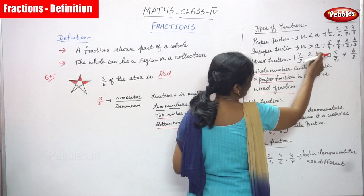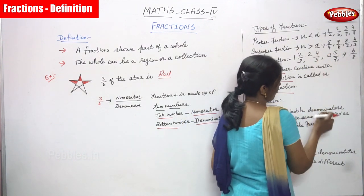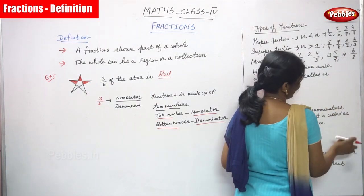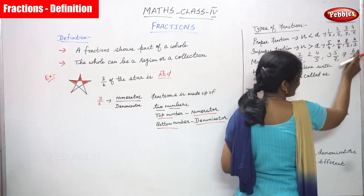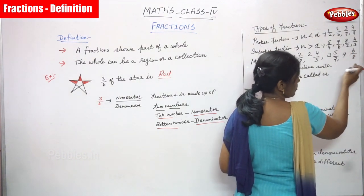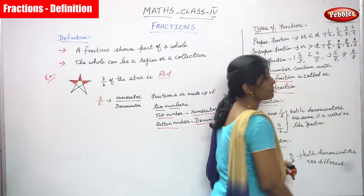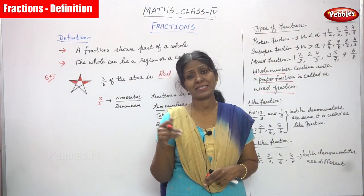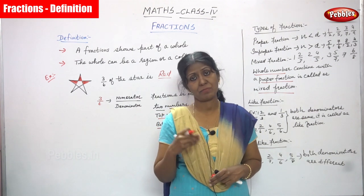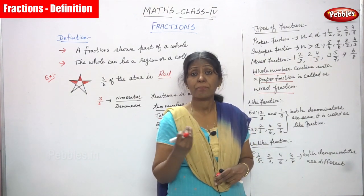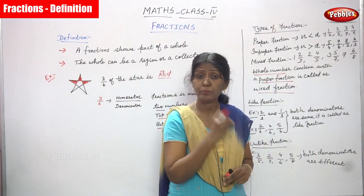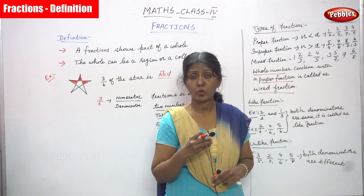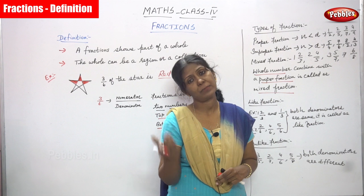More mixed fraction examples: 2 and 4 by 5 — 2 is the whole number and 4 by 5 is a proper fraction because 4 is less than 5. Also 3 and 5 by 7 — 3 is the whole number and 5 by 7 is a proper fraction since 5 is less than 7. And 7 and 6 by 8 — 7 is the whole number and 6 by 8 is a proper fraction because 6 is less than 8. Numerator less than denominator is always a proper fraction.